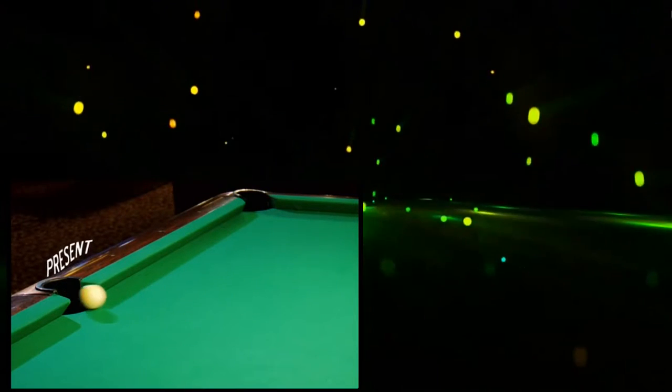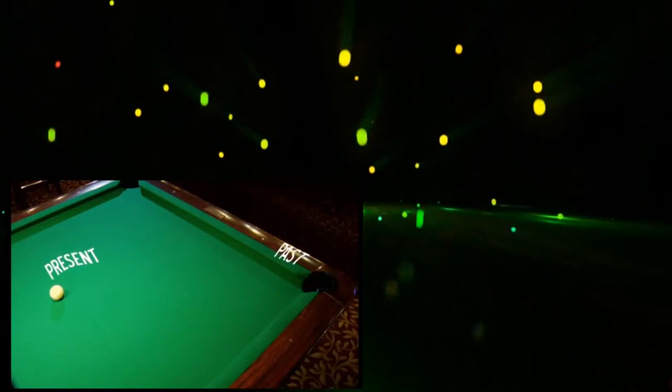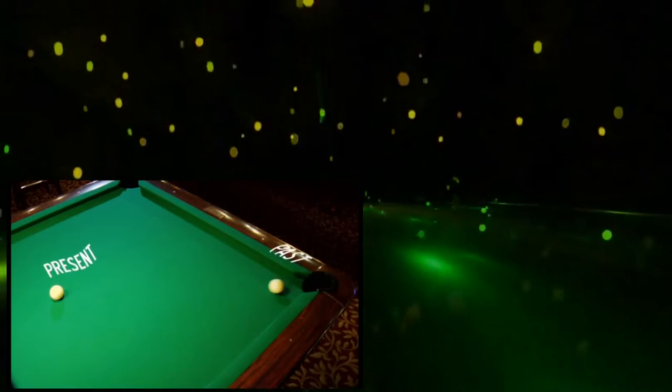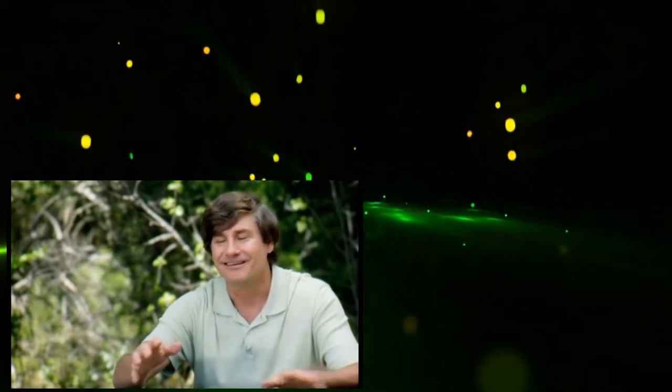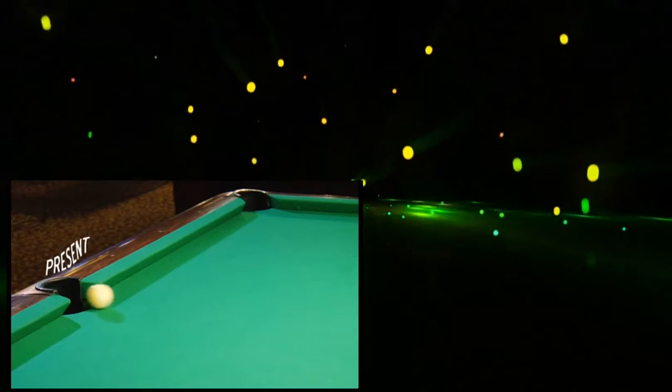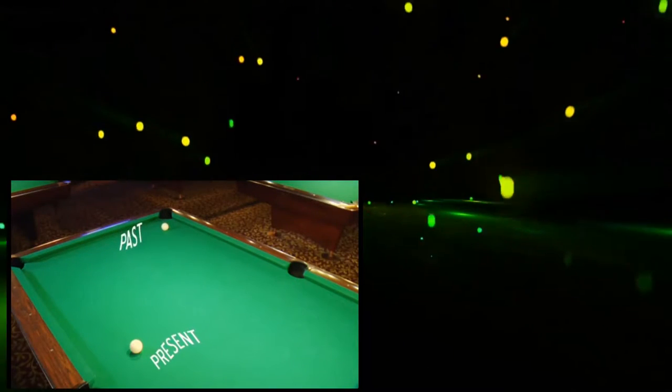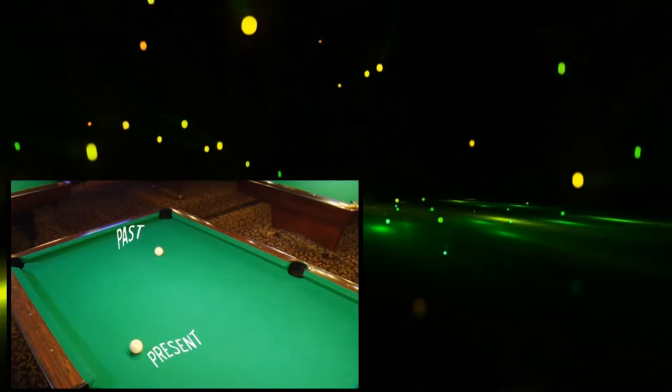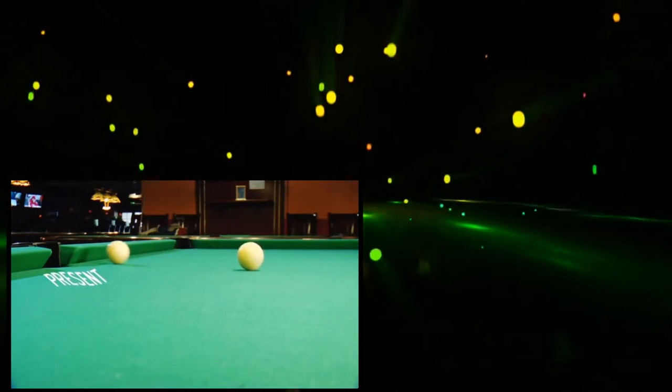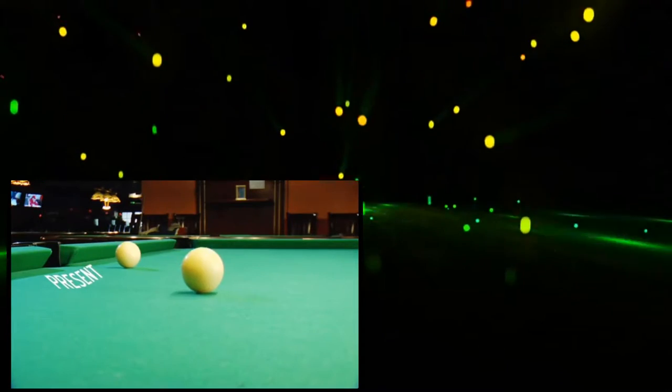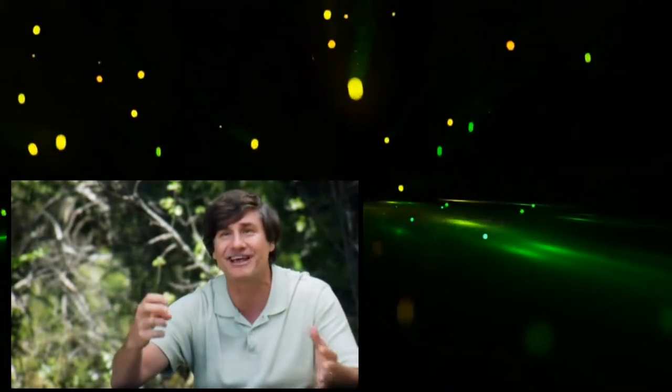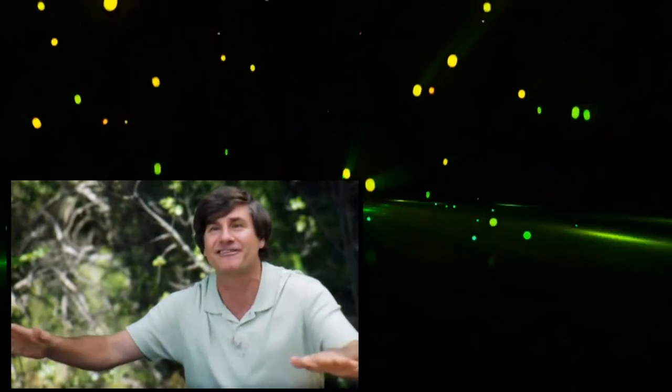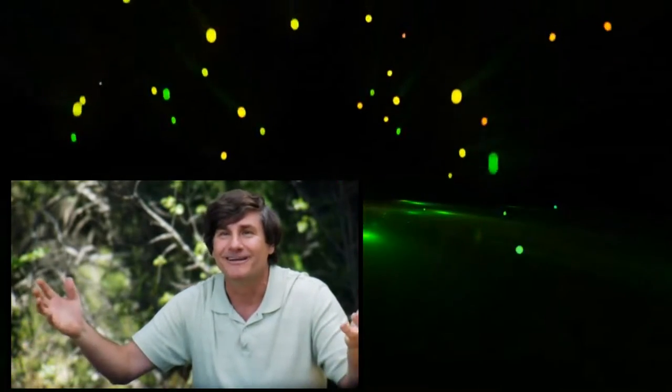Let's set up a pool table that's like a time machine. If a ball enters one pocket, it travels through a wormhole and exits another pocket before it entered. Suppose the ball goes through, emerges before it entered, and then hits itself, deflecting it and preventing it from entering. That's a paradox.